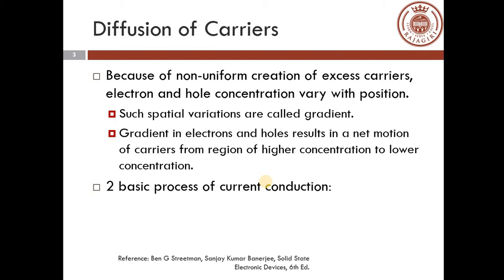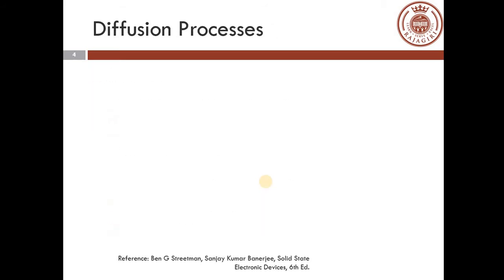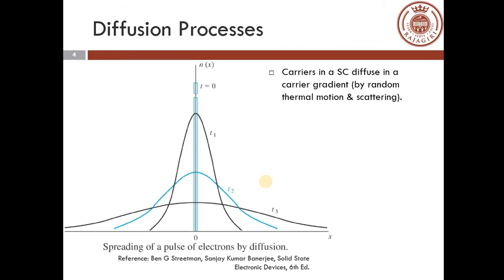When there is a movement of charge carriers, there is current conduction. The two basic processes that contribute to current conduction in a semiconductor are diffusion due to carrier gradient and drift of charge carriers due to an electric field. In a semiconductor, charge carriers diffuse from regions of higher concentration to regions of lower concentration by random thermal motion and scattering from the lattice and from impurities in the lattice.